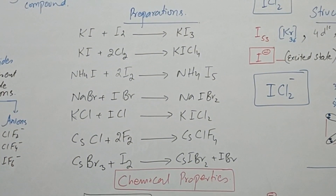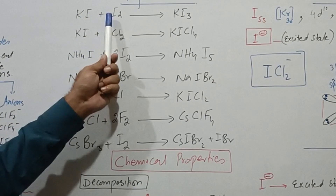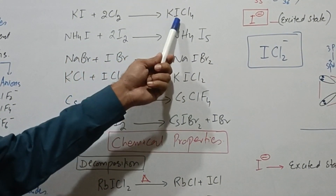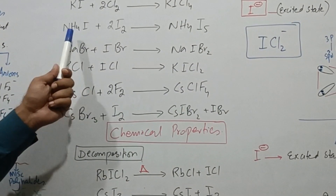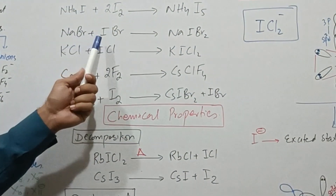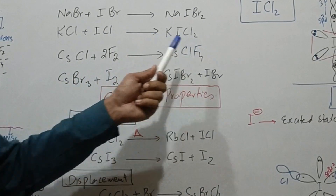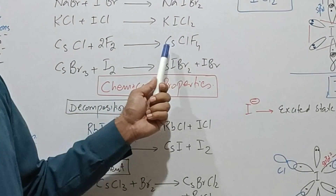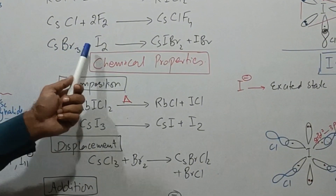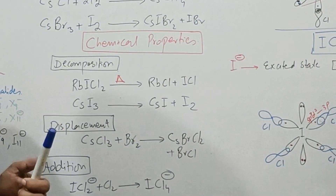Now, a few preparatory methods for polyhalide compounds: potassium iodide reacts with iodine to prepare KI3. If potassium iodide is treated with chlorine, potassium iodochloride can be produced. Ammonium iodide reacts with iodine to give a pentahalide compound, and sodium bromide reacts with iodobromide to give sodium iodobromide. KCl reacts with ICl to form KICl2. Cesium chloride reacts with fluorine to give cesium chlorofluoride — a mixed polyhalide. Cesium bromide reacts with iodine to give a further product.